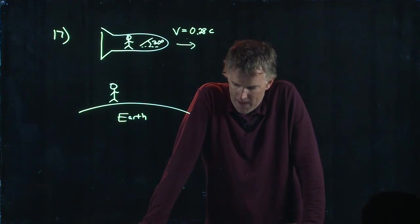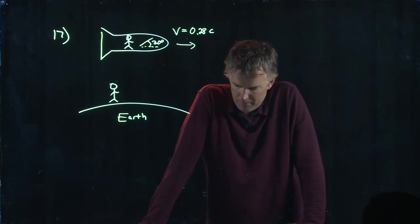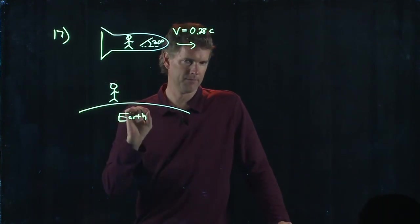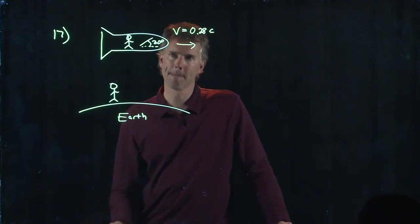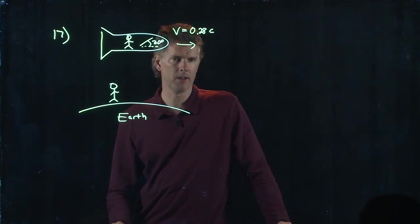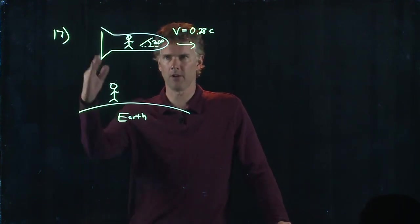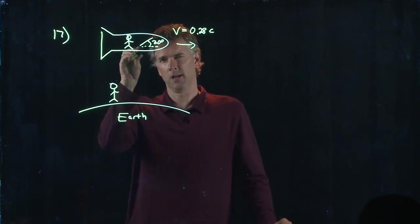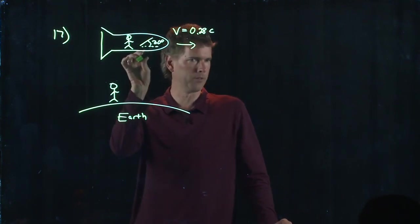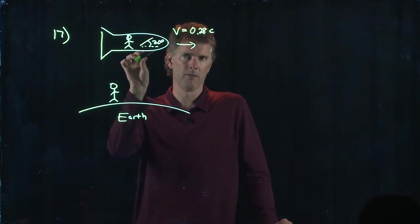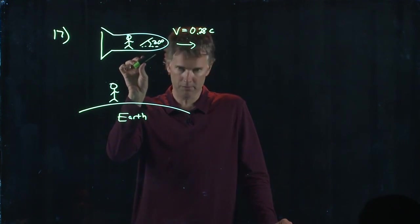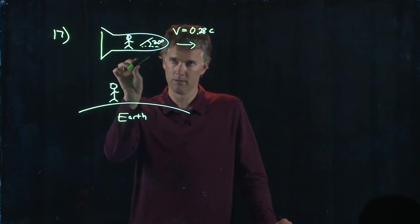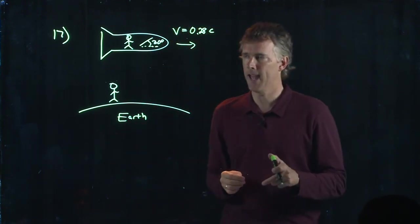And the question is, what angle does the pencil make according to Brian? So it's kind of a weird question, right? I mean, this astronaut's flying by and he's holding a pencil up at some angle. It almost seems like this guy should see the pencil at the exact same angle. But that's too obvious an answer, right? And in fact, we're not going to be suckered into answering A, 30 degrees.